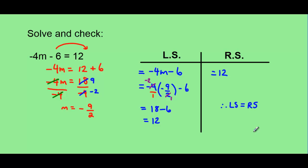Multi-step equations aren't that difficult, as long as we follow the simple rule that we always do the opposite operations when moving one number from one side to the other, and perform our operations using backwards BEDMAS.